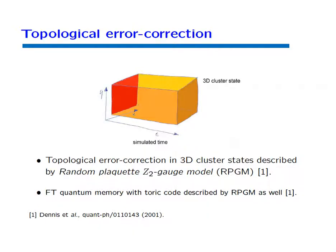Now let us discuss the effectiveness of this error correction procedure. It turns out we can map it to a model from classical statistical mechanics called the random plaquette Z2 gauge model. Interestingly, this same statistical model previously appeared in the discussion of fault tolerance of quantum memory with the Toric code, which gives us a useful hint.